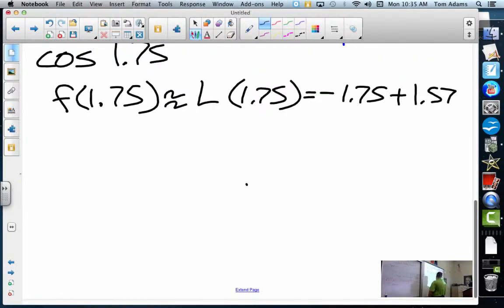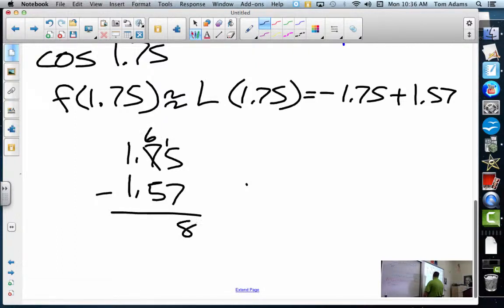How do I do that? Well, we know that it's going to be a negative, so I've got to find the difference of the two numbers. Borrow from here. 15 minus 7 is 8. This is 1. But remember that my answer is a negative, so this is approximately negative 0.18.